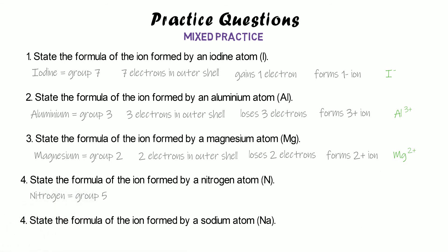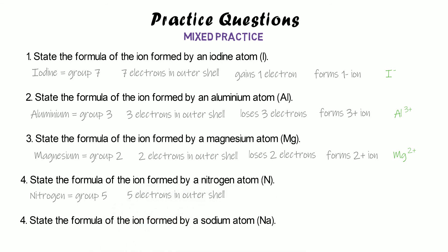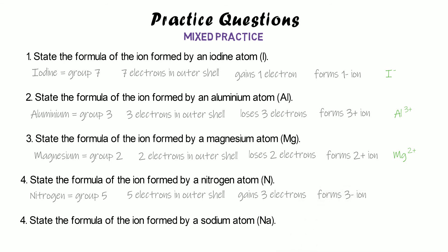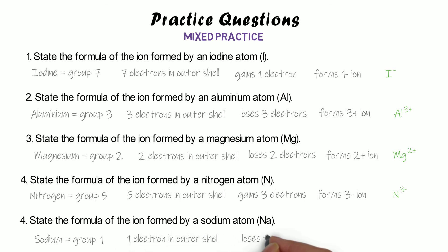Nitrogen is in group five — it could lose five or gain three, and gaining three is much easier — so it forms a 3− ion. The formula is N³⁻. Finally, sodium is in group one, with just one electron in its outer shell, so it loses that one electron and forms a 1+ ion: Na⁺. Notice that for a 1+ ion we just write + rather than writing 1+.